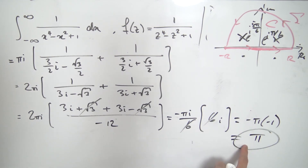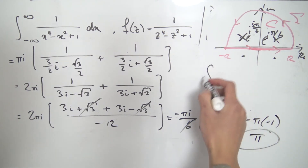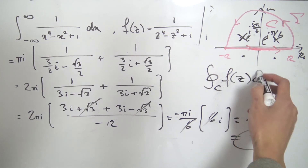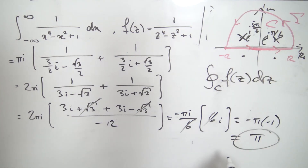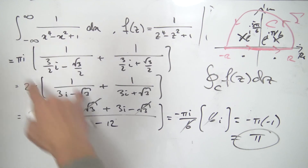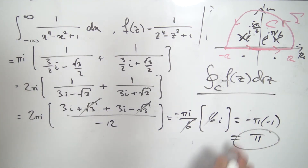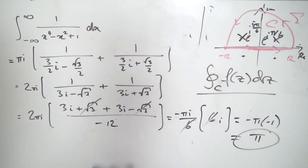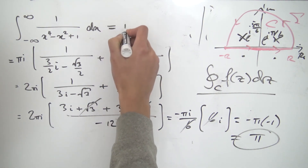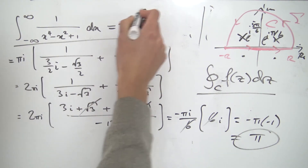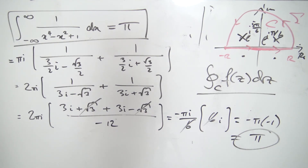So pi is the result of our contour integral over f of z, and since we showed our original integral equals this contour integral, the original integral from minus infinity to infinity of one over x to the four minus x squared plus one evaluates to pi. That's quite a nice result. Hope you guys enjoyed it — until next time, have a wonderful day!